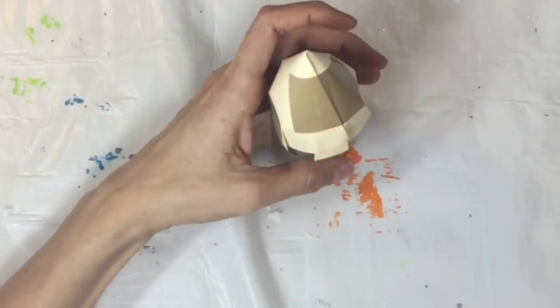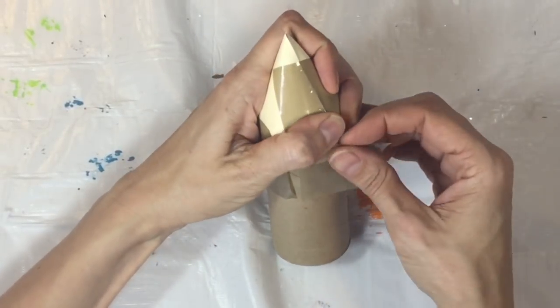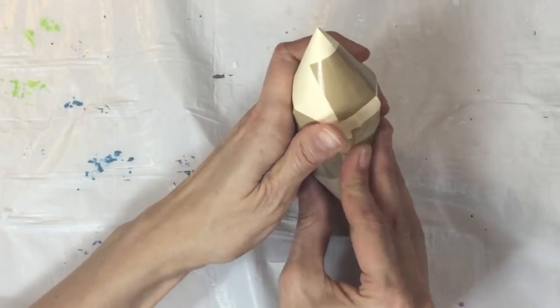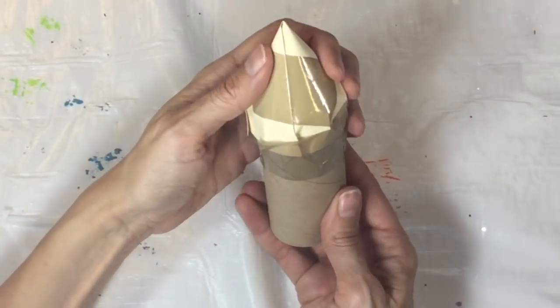Congratulations! You just made a toilet paper tube with a cone on top. I know what you're thinking, but don't you worry. It will soon become an amazing pencil sculpture.